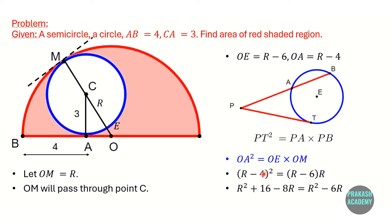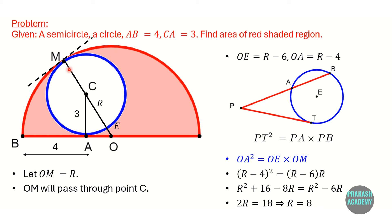Expanding the left side using (A minus B) squared equals A squared plus B squared minus 2AB gives R squared minus 8R plus 16. The right side expands to R squared minus 6R. The R squared terms cancel, giving 16 equals 8R minus 6R, so 2R equals 16, therefore R equals 8. The radius of the semicircle is 8 units.